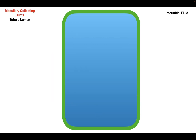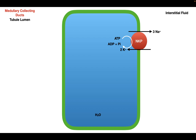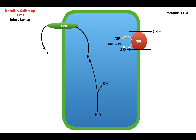The next region we're going to look at is the medullary collecting ducts. In the medullary collecting ducts, we also have the sodium-potassium pump, which moves three sodiums into the interstitial fluid and two potassiums into the cytosol using ATP hydrolysis. Inside the cytosol, water dissociates into hydronium and hydroxide. The hydronium ions go into the tubule lumen through proton pumps in the apical membrane, which hydrolyze ATP to do this.